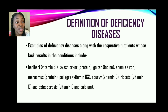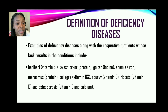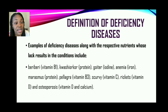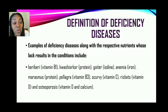Examples of deficiency diseases along with their respective nutrients: beriberi is caused by a lack of vitamin B1; kwashiorkor is caused by a lack of protein; goiter is caused by a lack of iodine; anemia is associated with a lack of the mineral iron; marasmus is also associated with a lack of protein and particularly affects children; pellagra is a lack of vitamin B3; scurvy is a lack of vitamin C; rickets is a lack of vitamin D; and osteoporosis is associated with a lack of vitamin D and also calcium — phosphorus may also come into play.